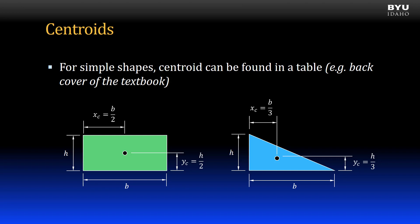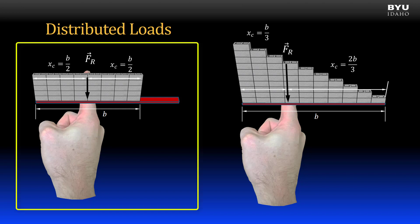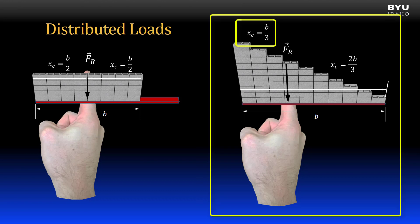For simple shapes the location of the centroid can be easily found in tables, for example the back cover of a printed textbook. The centroid is located at a single point defined by both a horizontal and vertical dimension. Since the resultant force acts through the centroid, the vertical dimension is not important for our examples. For a triangle, the centroid is located horizontally one-third of the base dimension from the tall end of the triangle. So for balancing the load on your finger: right in the middle for the uniform load, and one-third the distance from the big end for the triangular load.